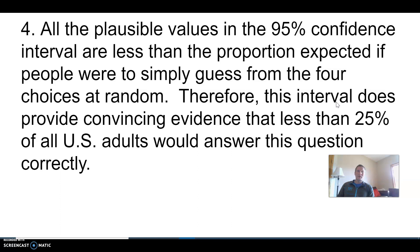All the plausible values are less than 25%. All the plausible values in the 95% confidence interval are less than the proportion expected if people were simply guessing from four choices. Therefore, this interval does provide convincing evidence that less than 25% of all U.S. adults would answer this question correctly.